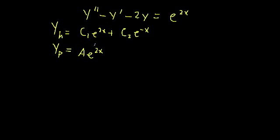And if we were to plug this particular solution in, we know simply by virtue of the fact that it's in the homogeneous solution, if we plug it in, everything in this differential equation will turn out to equal 0, and not e^{2x}. So this is not a proper solution, which means if we want to find a solution, we're going to have to modify this somehow.